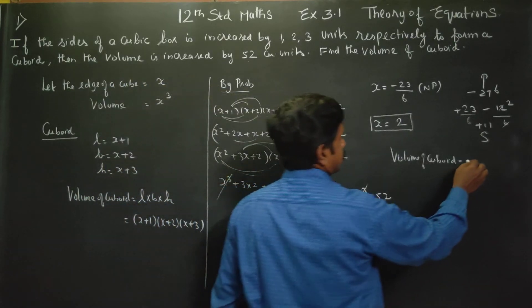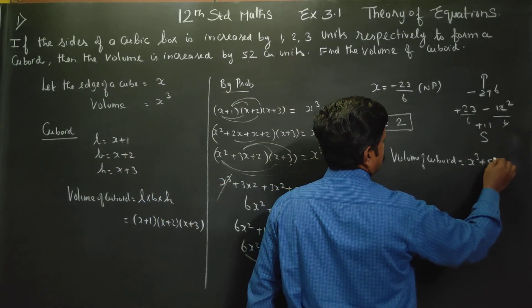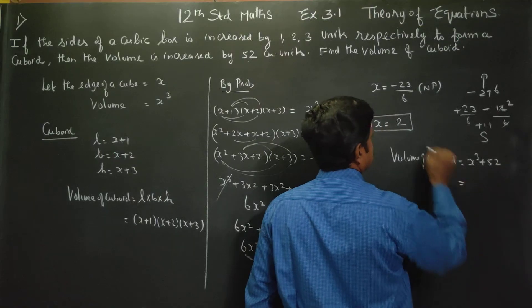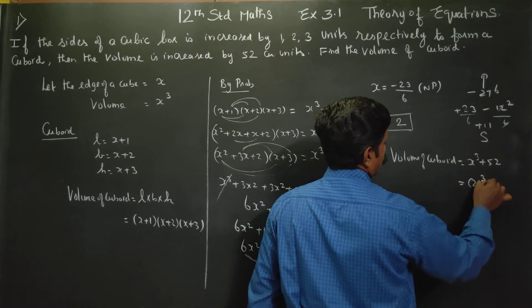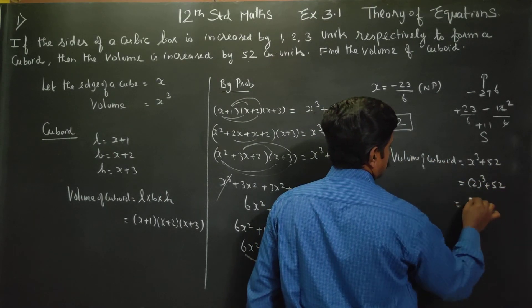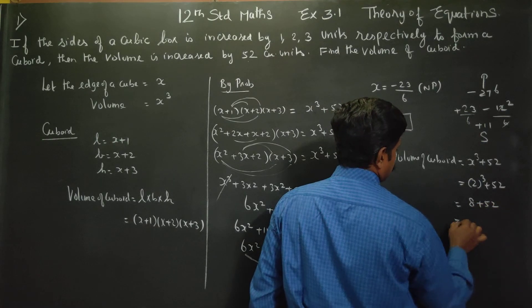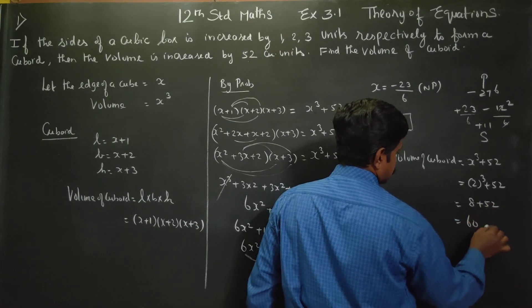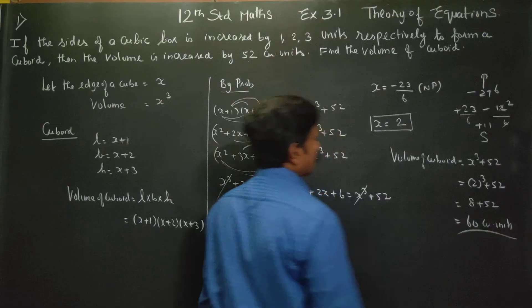So x = 2. The volume of the cuboid is x³ + 52 = 2³ + 52 = 8 + 52 = 60 cubic units.